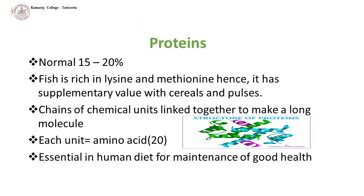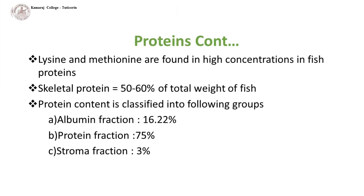Fish is an excellent source of protein due to its quality and quantity. They contain around 20% of protein. The biological value of fish protein is 80%. Fish is rich in lysine and methionine, and hence it has supplementary value with cereals and pulses. Proteins are chains of chemical units linked together to make a long molecule, each made up of 20 amino acids. Lysine is essential in the human diet for maintenance of good health, and lysine and methionine are found in high concentrations in fish proteins.